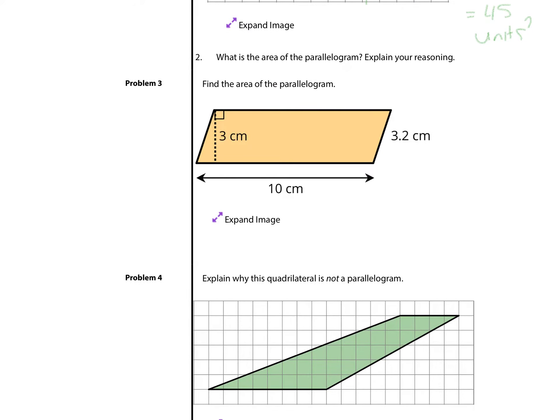Find the area of the parallelogram. If we take this triangle and slide it down over here, we now have a ten centimeter by three centimeter rectangle. And if I take three and multiply it by ten, I get a solution of thirty square centimeters.